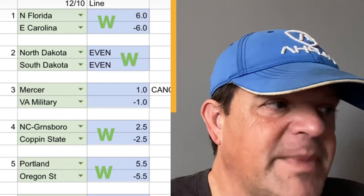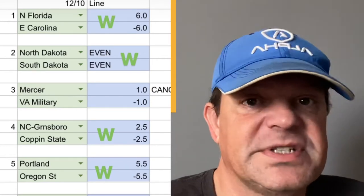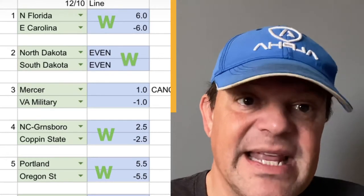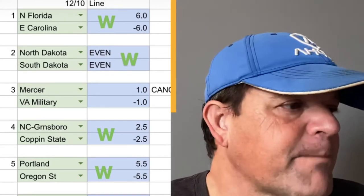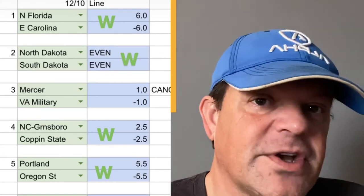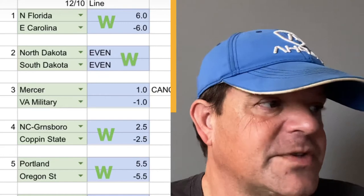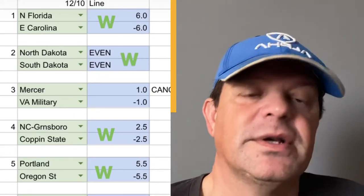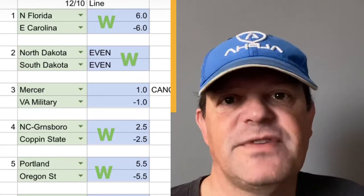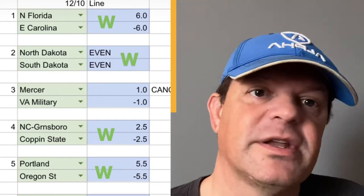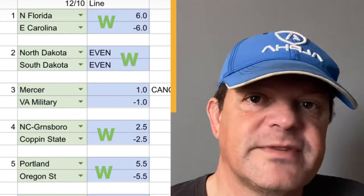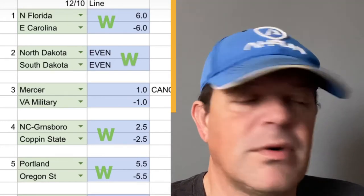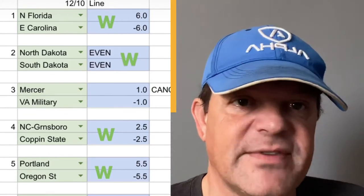Next game: a big rivalry — North Dakota vs. South Dakota. My stat model had this one as even. The actual line was South Dakota minus 3.5, meaning North Dakota was plus 3.5. The value was with North Dakota — we had a 3.5-point differential in their favor — and North Dakota won that game outright, 75 to 71.